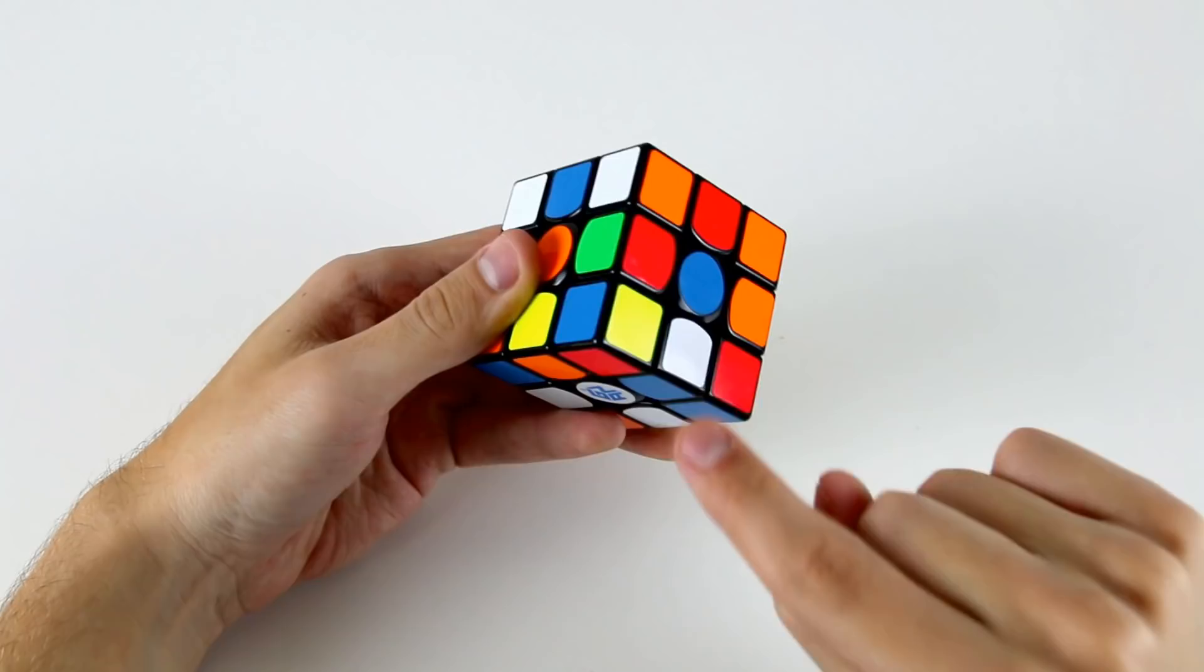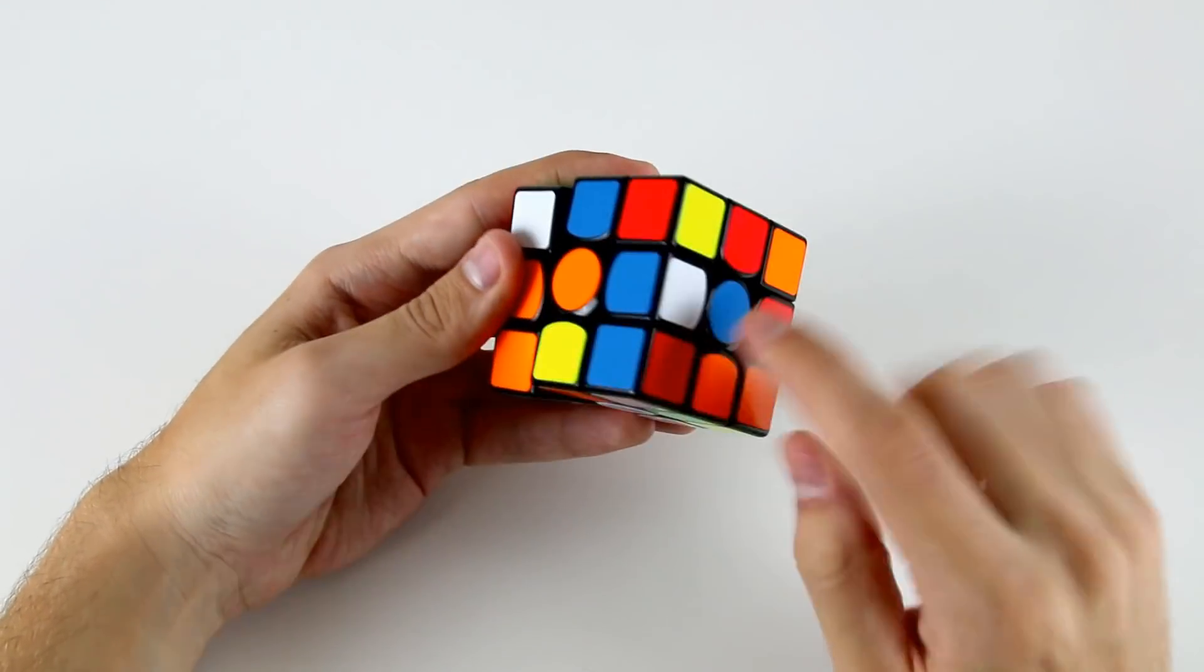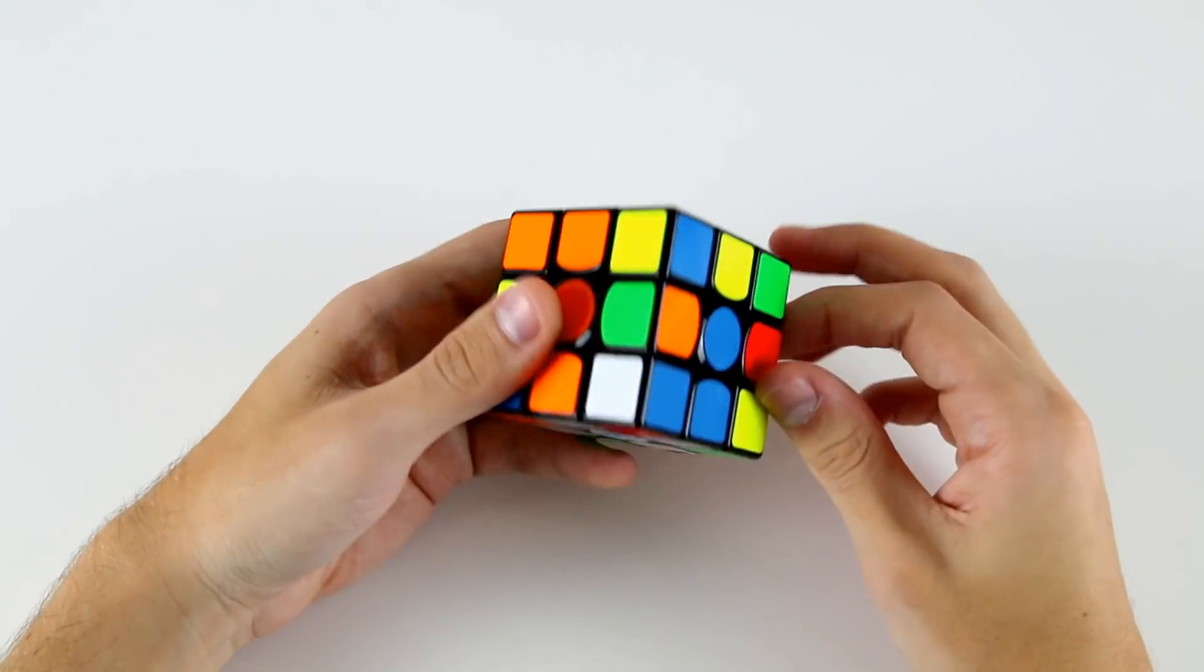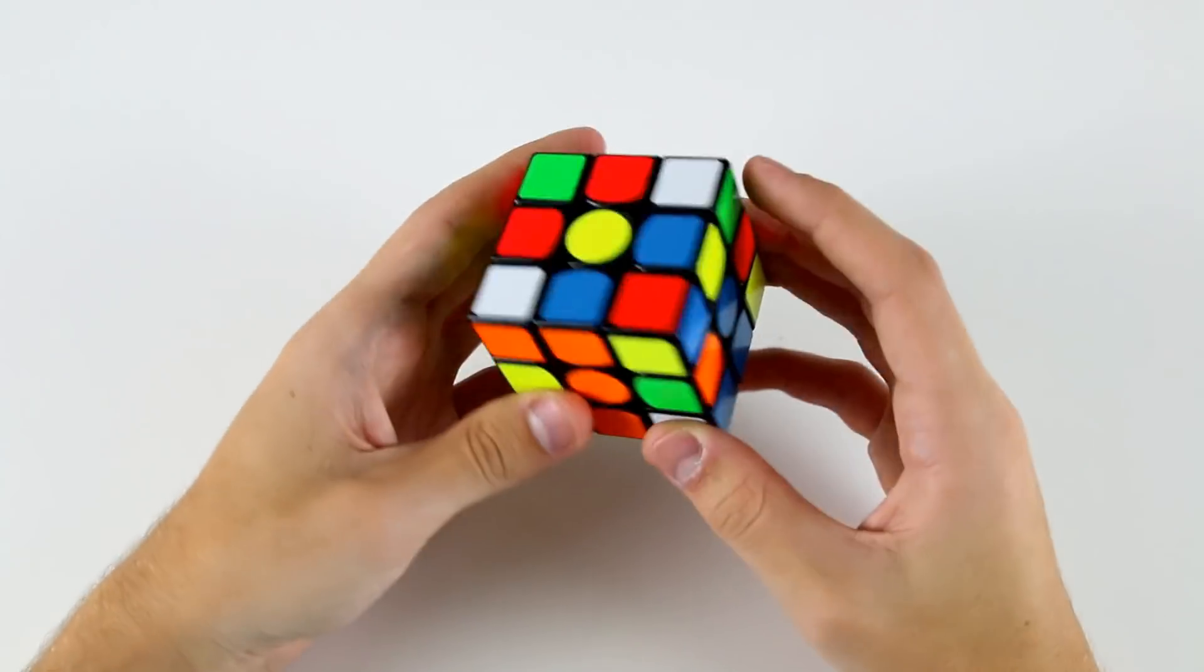As we insert this one into the cross layer, we can also insert this one. If we do an r, that brings this one into the middle layer, then we do an f, then we do an r, then we do a d, and we've got our cross like that.